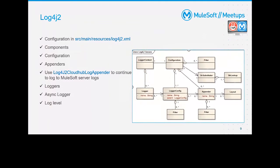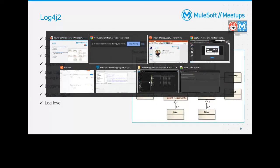So, what is Log4j2? Log4j2 did not originate from MuleSoft — it comes from Apache services, which have used it in Java services for a very long time. Since MuleSoft is also a Java-based service, it adopted Log4j2. MuleSoft provides a default Log4j2 file built into your project under src/main/resources.